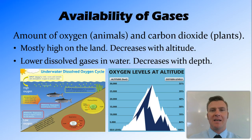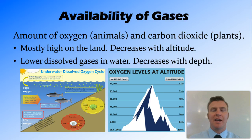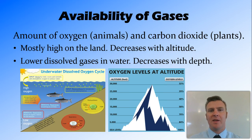Availability of gases refers to how available oxygen is for animals and carbon dioxide is for plants. Most biomes on land have pretty good availability of gases, being surrounded by gas. However, at very high altitudes the air gets thinner, so the availability of gases can decrease.